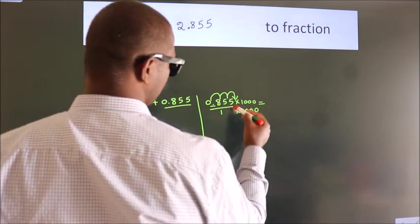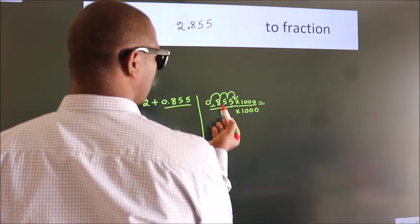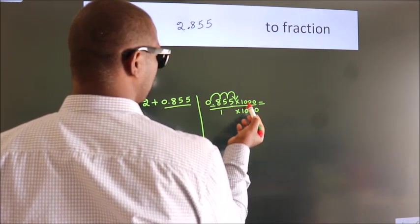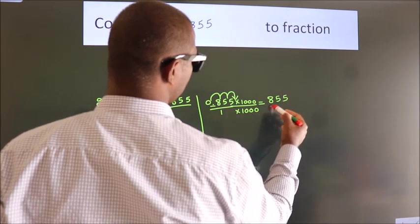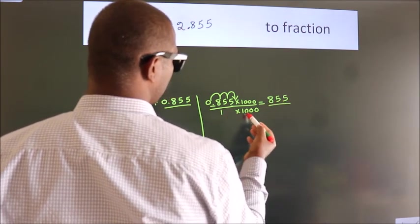Next, 0.855 into 1000 is 855. 1 into 1000.